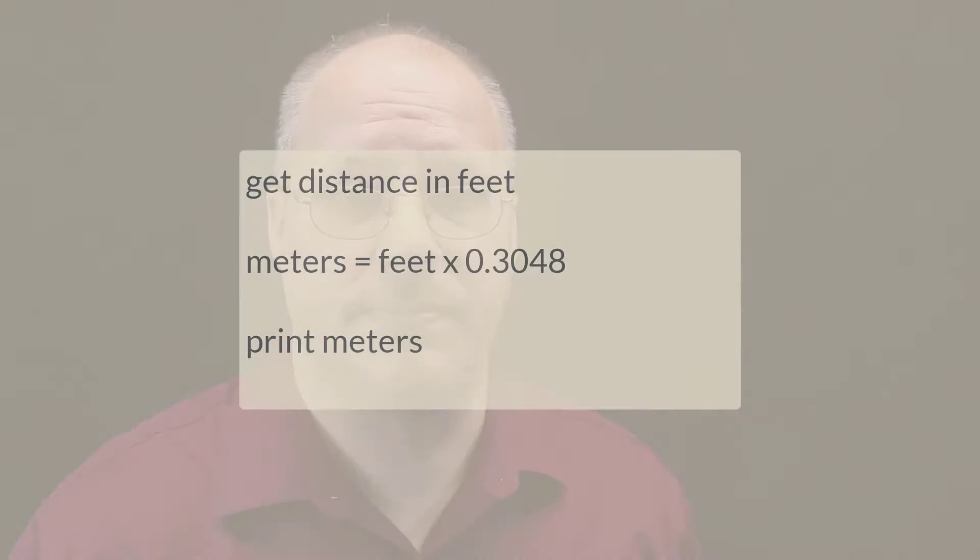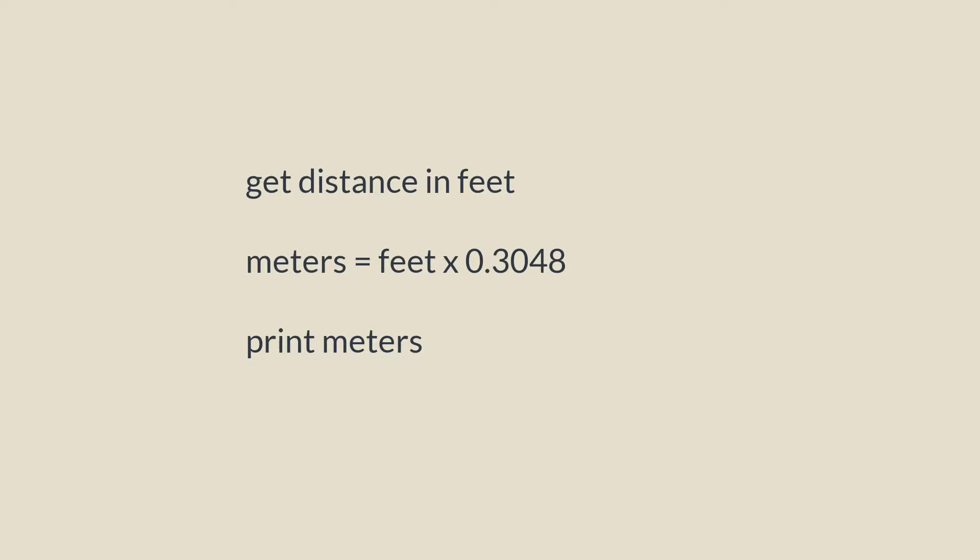The first one is going to be real nice and simple and simply converts feet into meters: get distance in feet, meters equals feet times 0.3048, print meters. This next pseudocode example is going to be a little bit more complex.